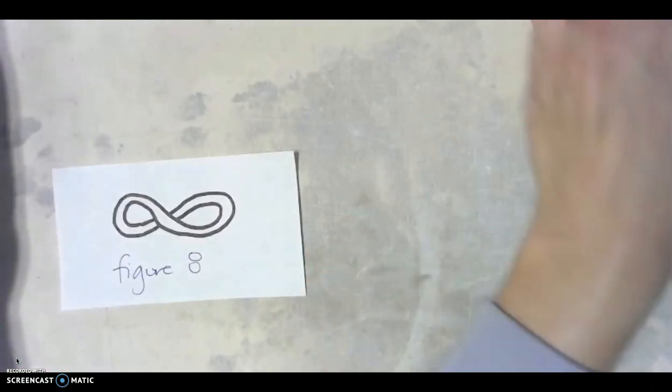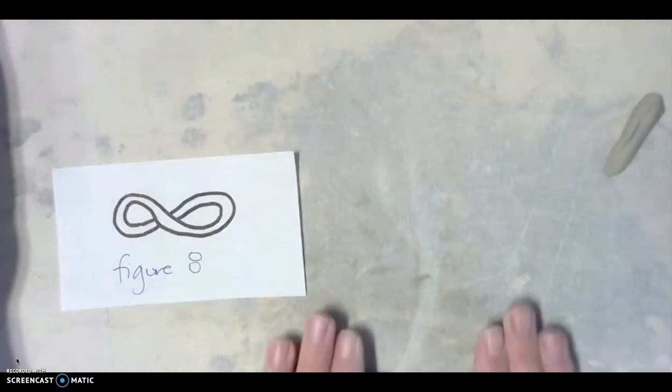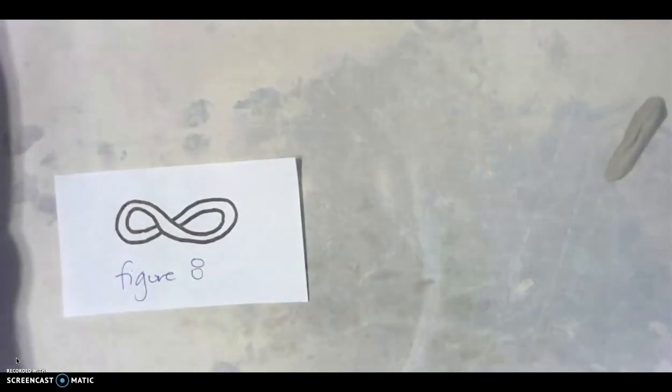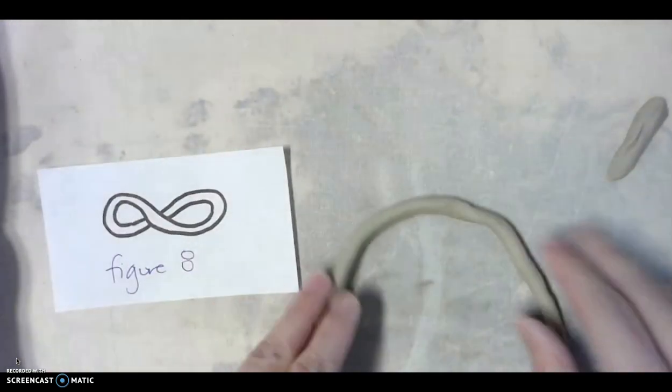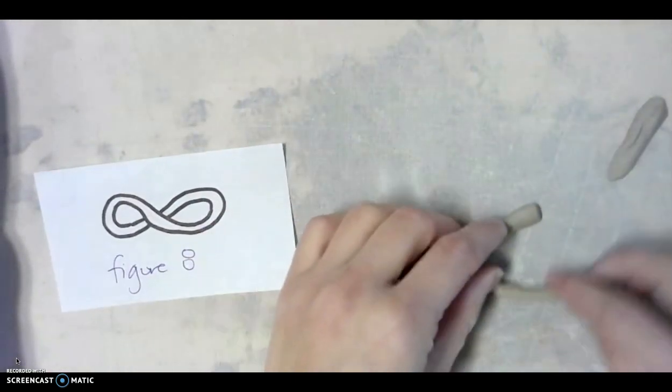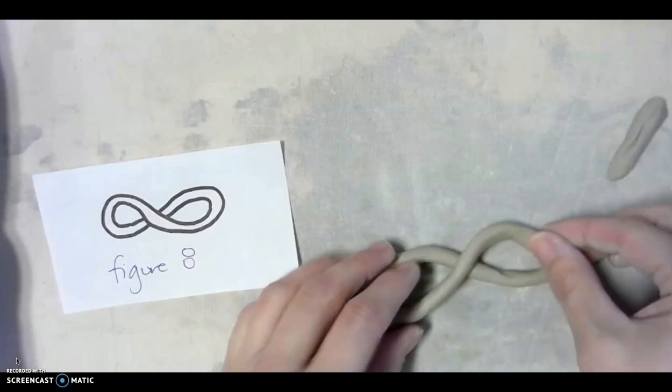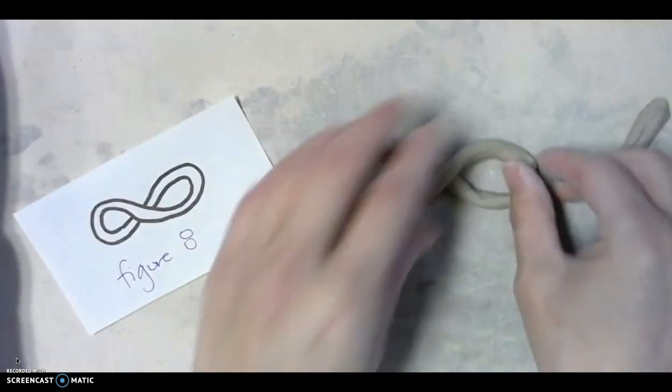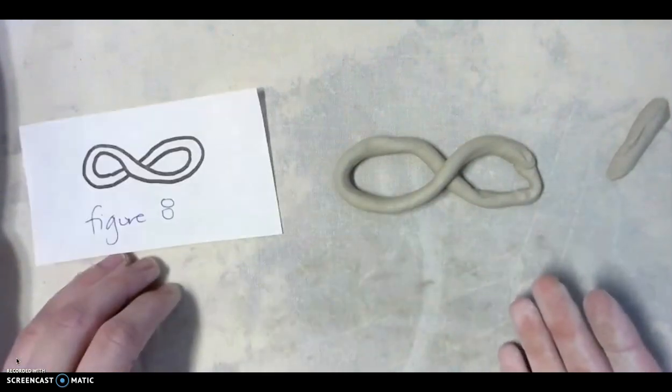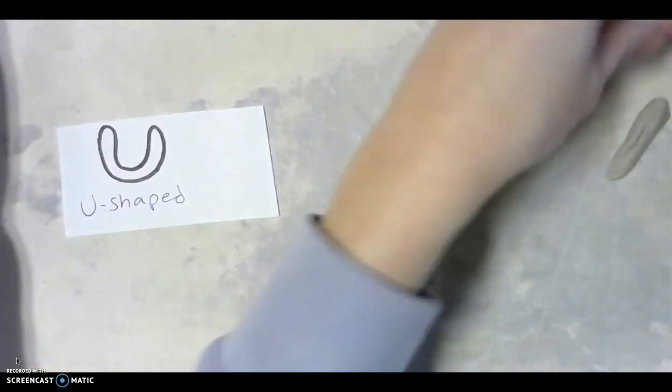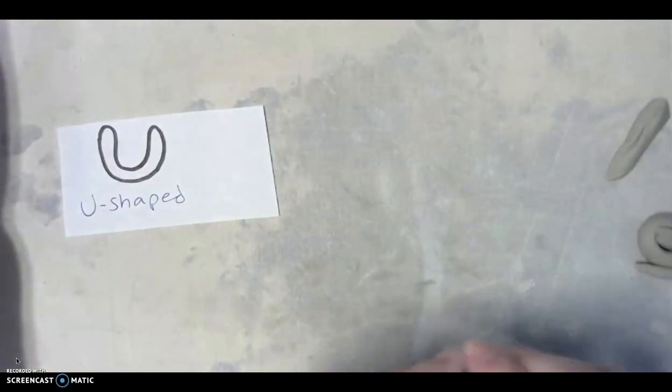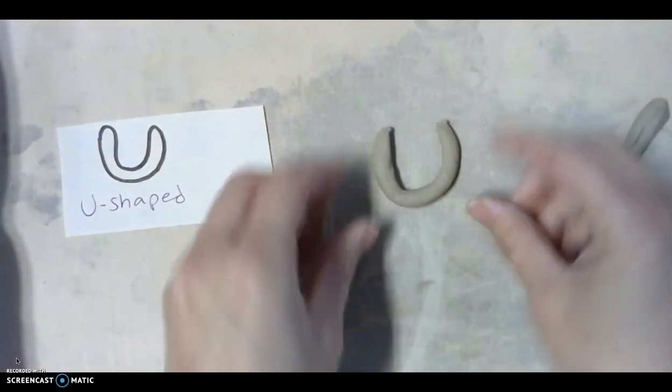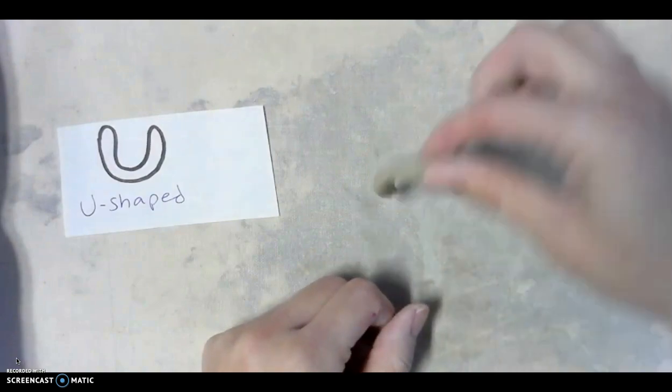Now a figure eight is where we're taking a coil and we're going to actually fold it around itself. So let's see, kind of like an infinity sign. And you do have to score and slip it or mush it together. Kind of reminds me of like a donut. So there's a figure eight. And U-shaped is pretty much an arch, but just on its own. So you could go that way or you could go that way.